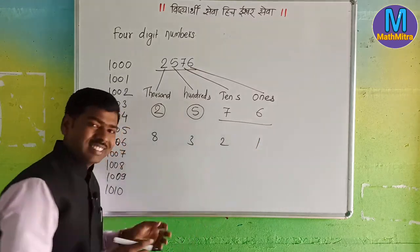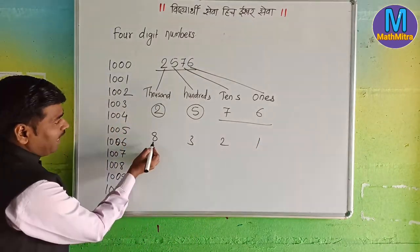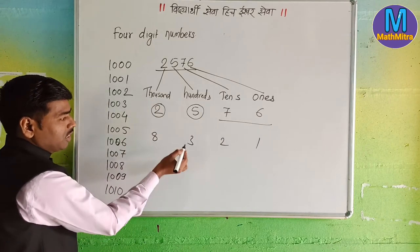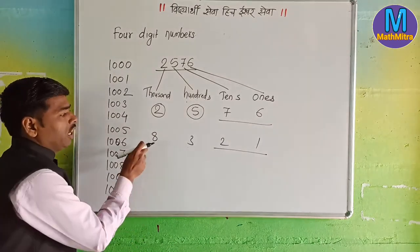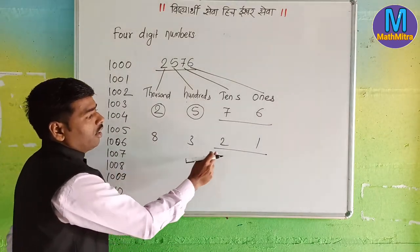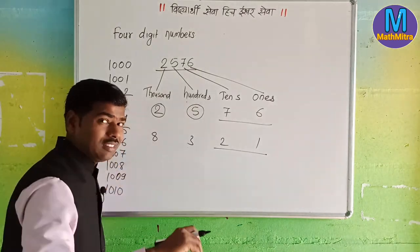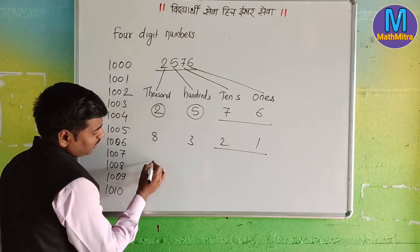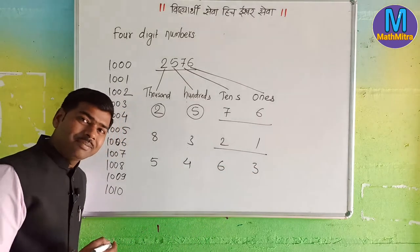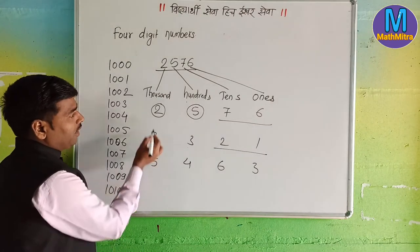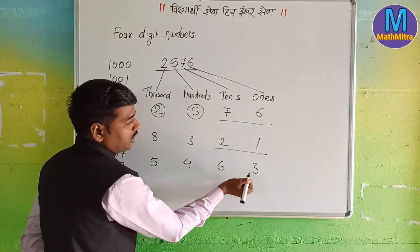Eight thousand three hundred and twenty one — 8,321. Very good! Next one has a number: five thousand four hundred sixty three — 5,463.